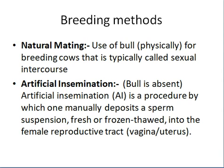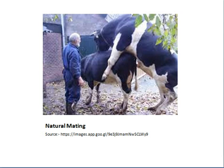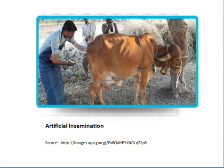The semen is deposited into the vagina or uterus for getting pregnancy. This is artificial insemination — it might be a bit new for some of you. Here we use a semen straw and insert semen into the uterus of a cow or buffalo.